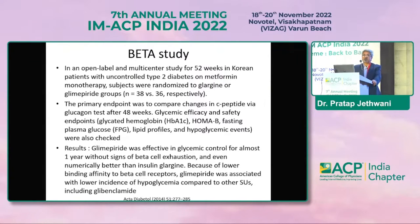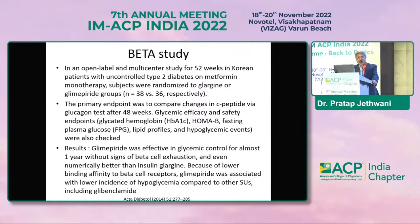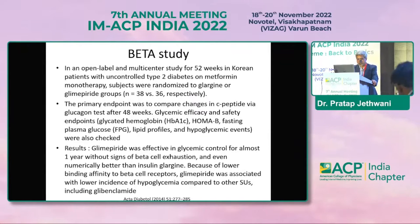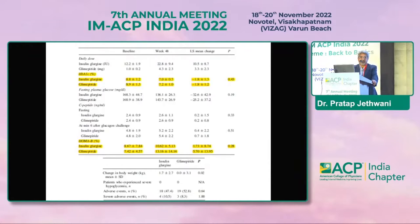This is a small study carried out in Korean patients over one year. Patients failing on metformin were given either sulfonylurea glimepiride or glargine, and their effects on beta cell function — in the form of glucagon-stimulated C-peptide change — were observed after 48 weeks. This showed that glimepiride was equivalent to glargine for glycemic control, the C-peptide was maintained, and it was not associated with any decline in beta cell function, thereby suggesting it is not associated with beta cell exhaustion.